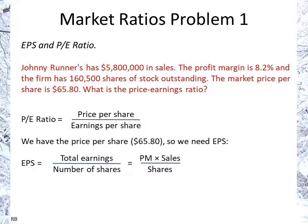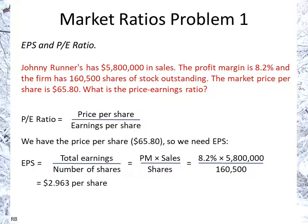Calculating those numbers out gives us $2.963 per share. As a general point, whenever you have an interim calculation you should keep as many decimals as you can, which is easy with calculators or Excel spreadsheets. For the final answer, you can then do some rounding — that's a general rule that should be kept.